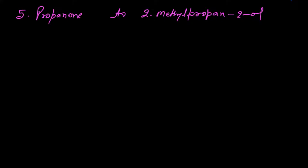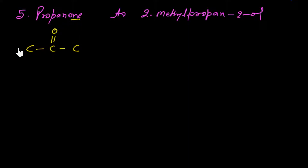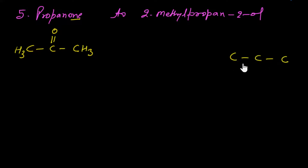The next conversion is propanone to 2-methylpropan-2-ol. First, we write the structure of propanone: prop means 3 carbons, -one means ketone, with C=O at the second position. For 2-methylpropan-2-ol: prop is 3 carbons, methyl at position 2, and OH (ol) at position 2 as well.